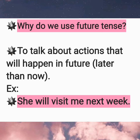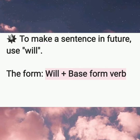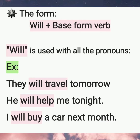As you saw in the examples, we use 'will' plus the base form verb to make a sentence in the future. You have to know that 'will' is used with all the pronouns — they, he, she, it, you. For example: they will travel tomorrow; he will help me tonight; I will buy a car next month. There is no exception. Will is a friend of all the pronouns.